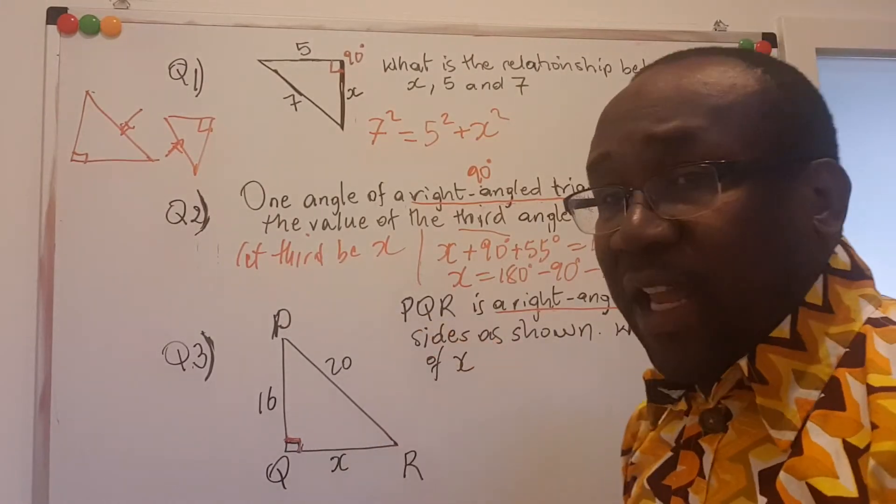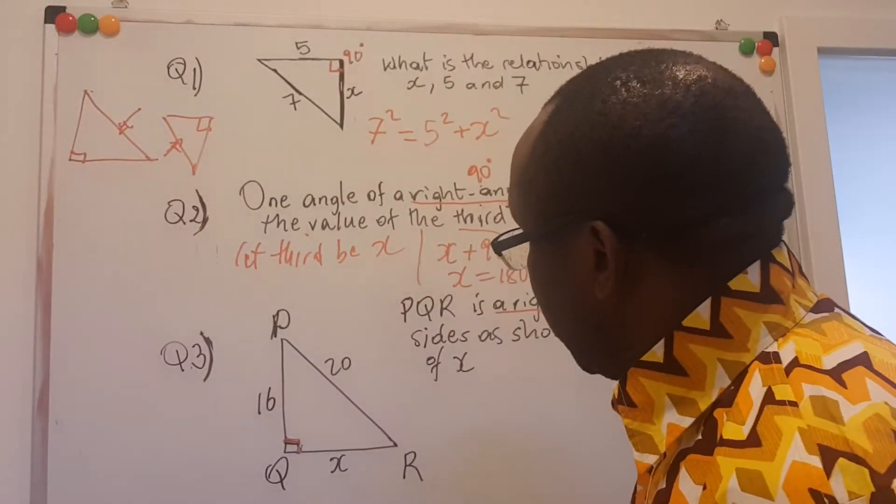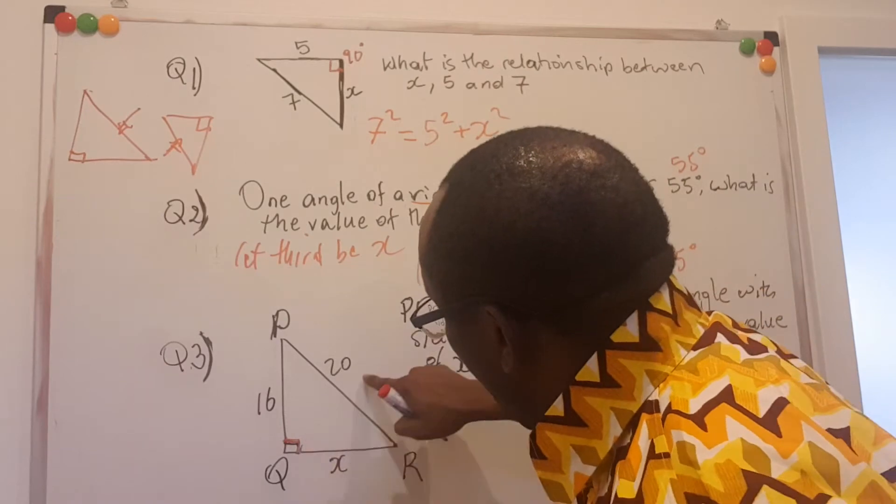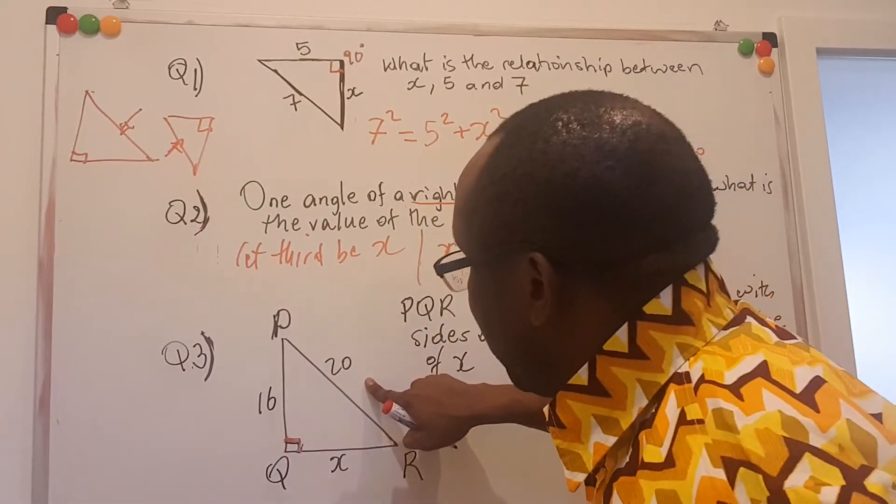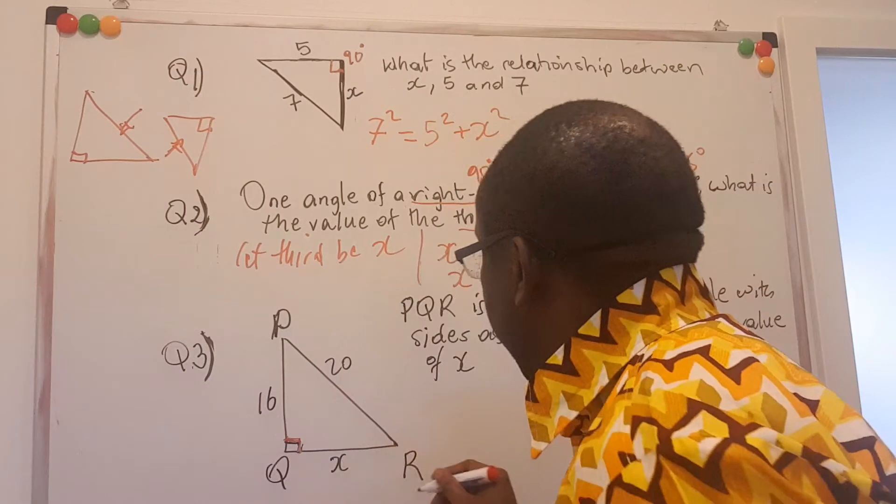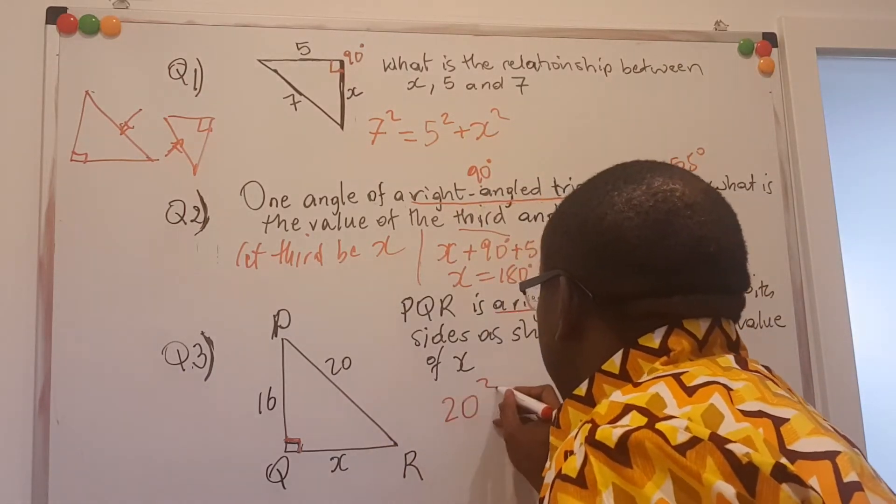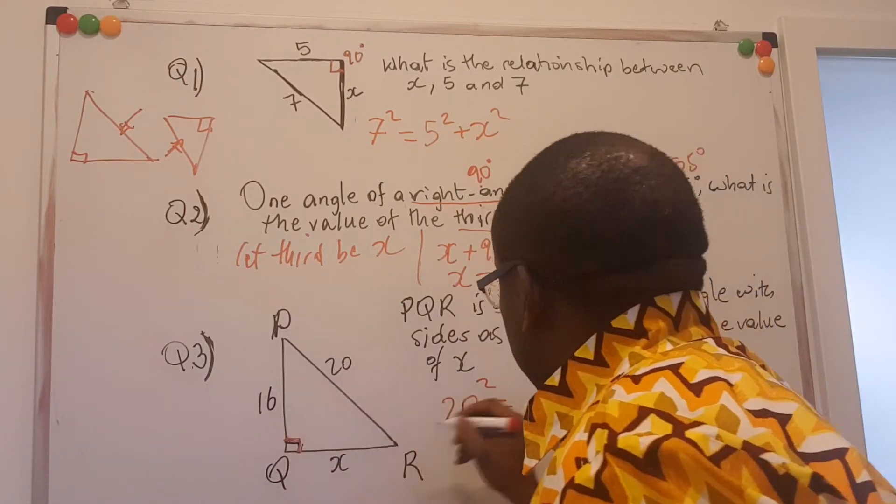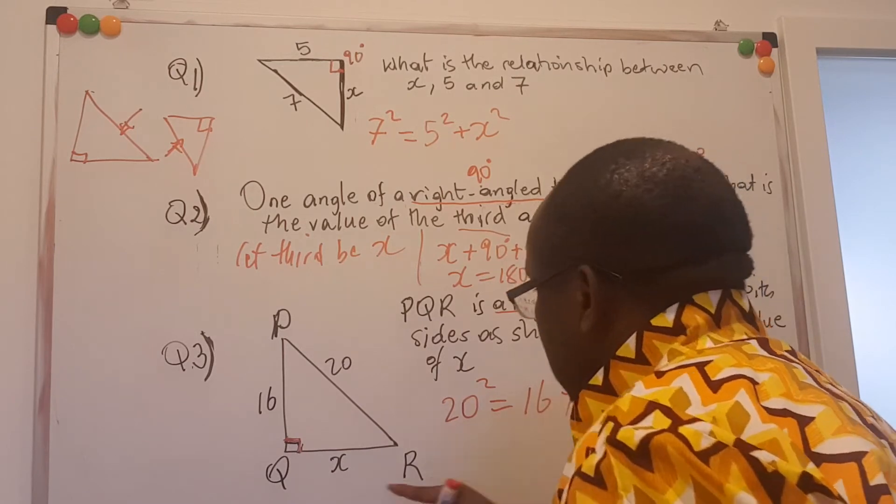So we apply again our Pythagoras theorem, which says that the square of the side opposite the right angle, the hypotenuse, is equal to the sum of the square of the other two sides. That means 20 squared is equal to 16 squared plus x squared.